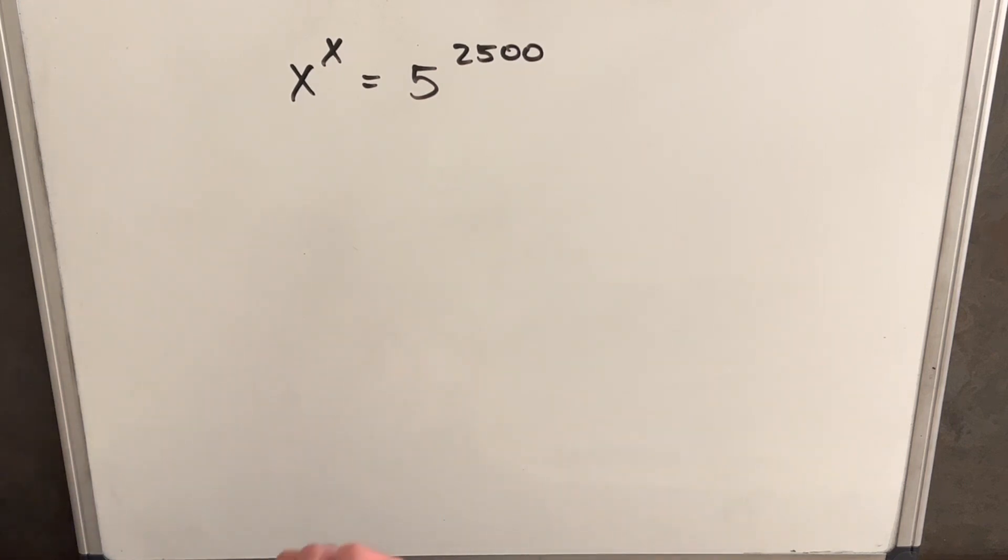We have this exponential problem on the board. We have x to the x equals 5 to the 2,500.